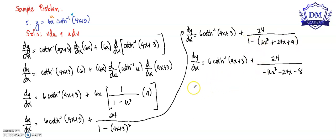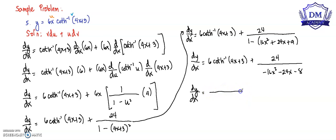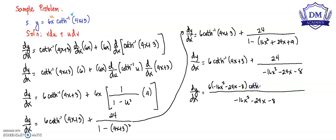We may also write our answer as: dy over dx is equal to 6 times negative 16x squared minus 24x minus 8 times inverse hyperbolic tangent of 4x plus 3, plus 24, all over negative 16x squared minus 24x minus 8. Note: 6x times 1 times 4 must be 24x, so the numerator also carries x terms.